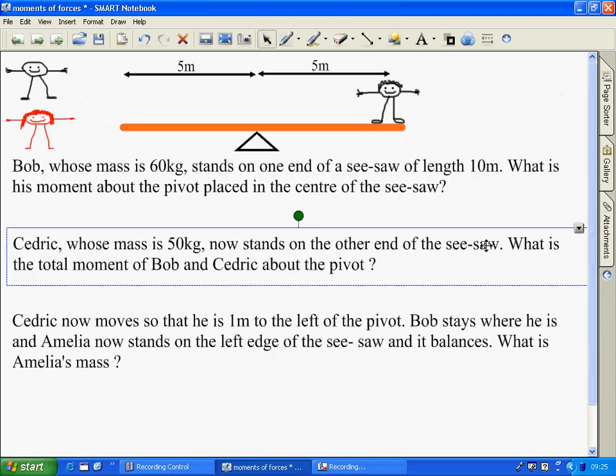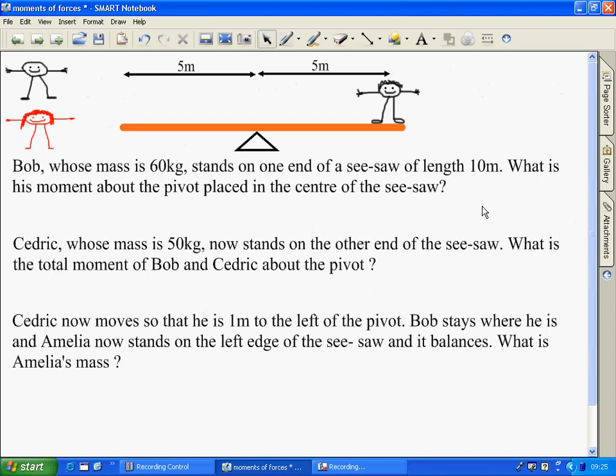Let's look at some practical examples. Bob stands on the end of a seesaw. His moment about the pivot point in the middle - Bob has a weight of 60g. His moment clockwise, because we need to define moments in either clockwise or anticlockwise as a direction, is his distance of 5 multiplied by his weight of 60g, giving us 2943 newton metres.